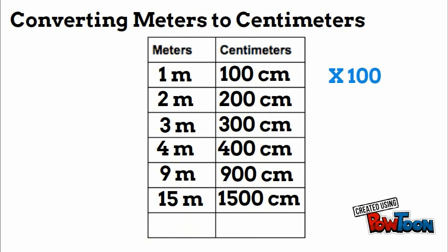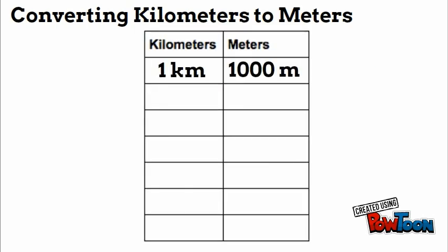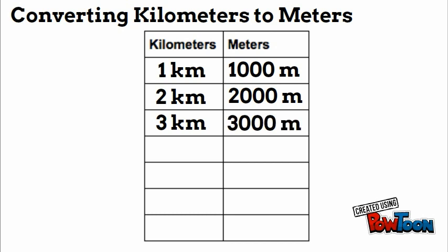Let's use the table to convert kilometers to meters. One kilometer is 1,000 meters, so two kilometers would be 2,000 meters, three kilometers is 3,000 meters, and seven kilometers is 7,000 meters.